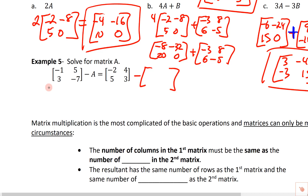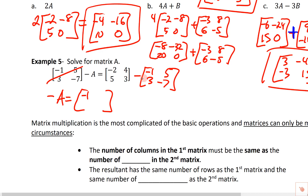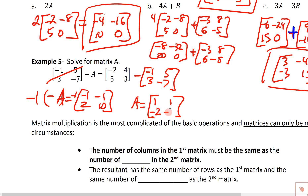For solving for matrix A algebraically: subtract the known matrix from both sides. Negative A equals: negative two minus negative one is negative one; four minus five is negative one; five minus three is two; three minus negative seven is ten. Then multiply both sides by negative one to get A equals one, one, negative two, negative ten.